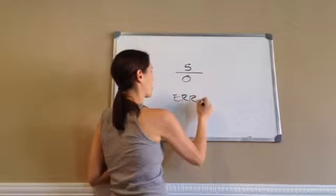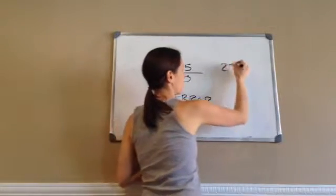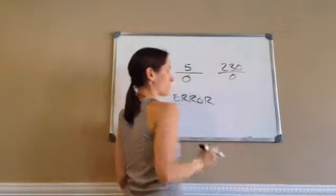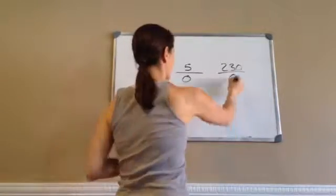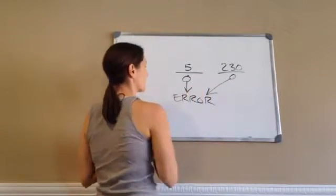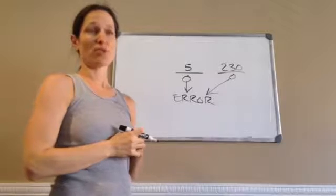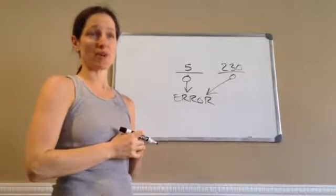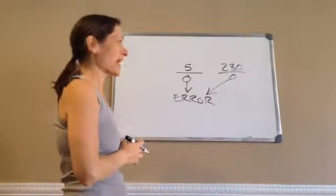Error. Error. 230 divided by zero, what do you get? Error. Error. Guess what? You can't divide by zero. You cannot divide by zero.